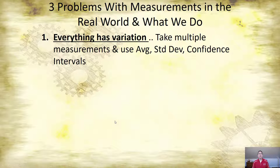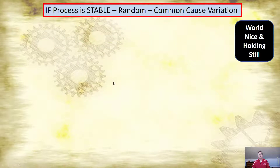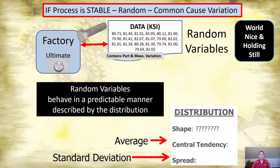Because we're taking data, we're worried about real-world problems with data. The first thing we said is everything has variation — there's variation in everything. So how do we know what we can expect from something? If the process is stable — random, common cause variation — then the measurements you take are random variables. That means they behave in a predictable manner described by a distribution.